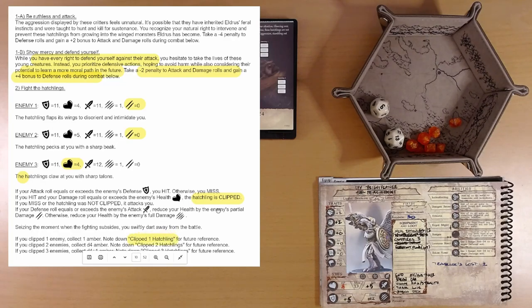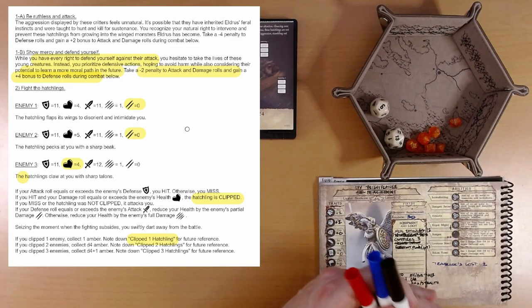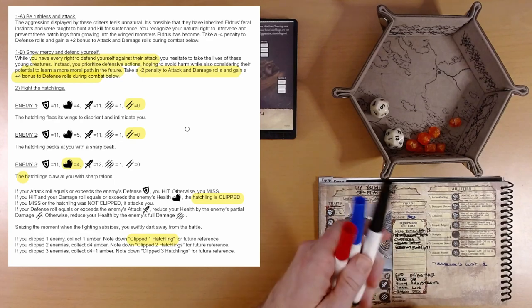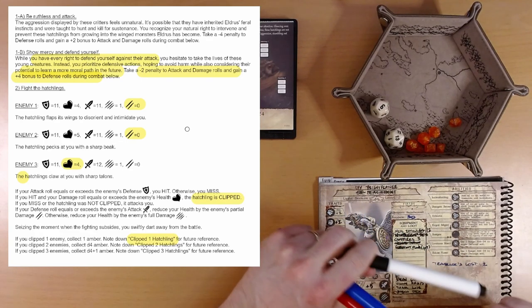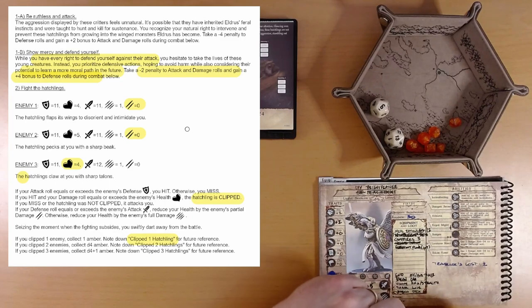So we have clipped one hatchling and we collect one amber. So we would have gotten more amber if we clipped more hatchlings. I can't imagine clipping them as good either. We certainly don't want to kill them. Okay.